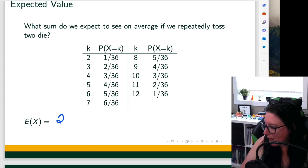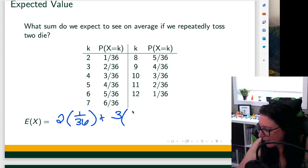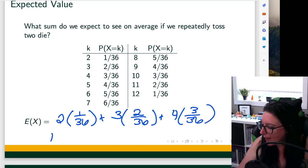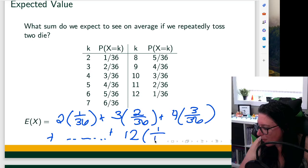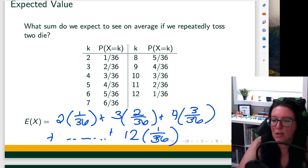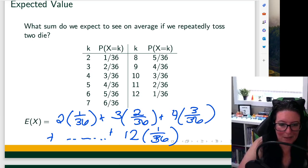two times the probability of two plus three times the probability of three plus four times the probability of four. And we keep going all the way to 12 times the probability of 12. So we'd add all of those up to get our expected value.